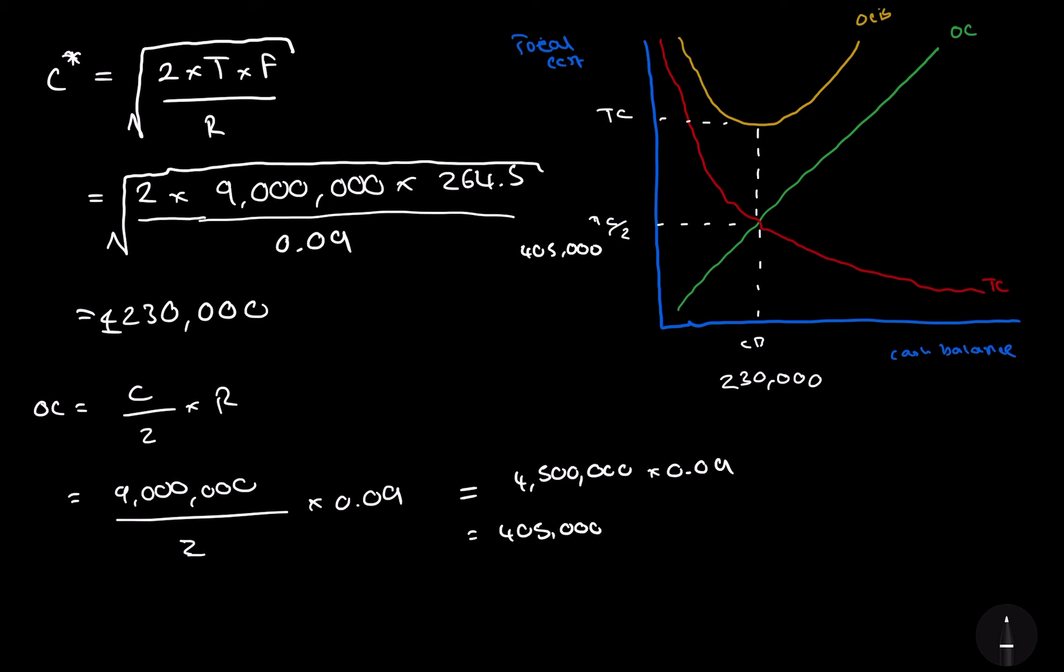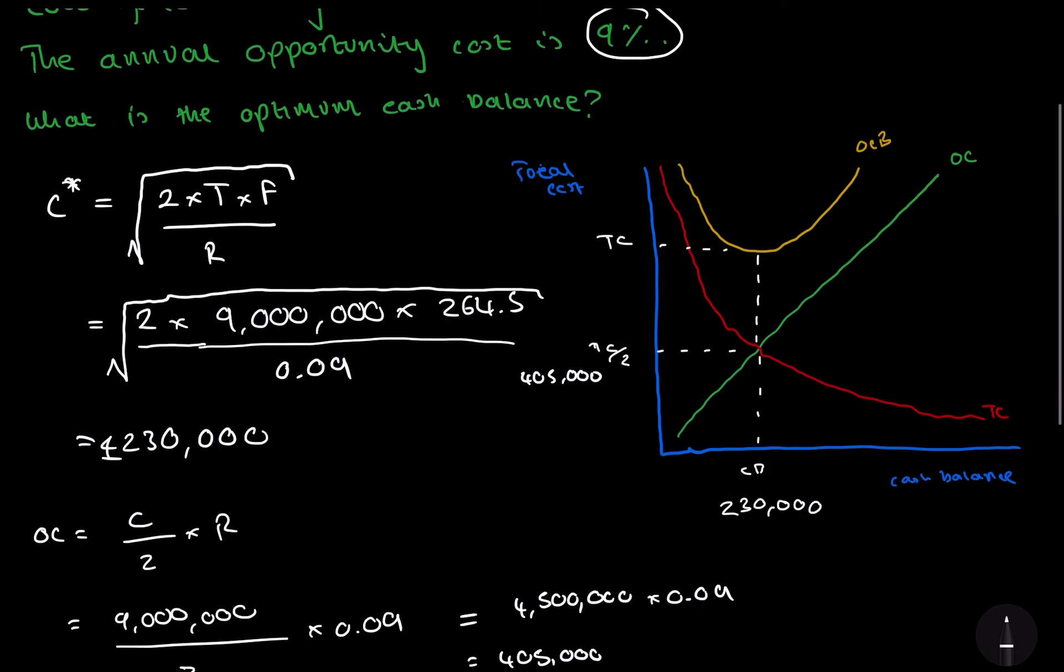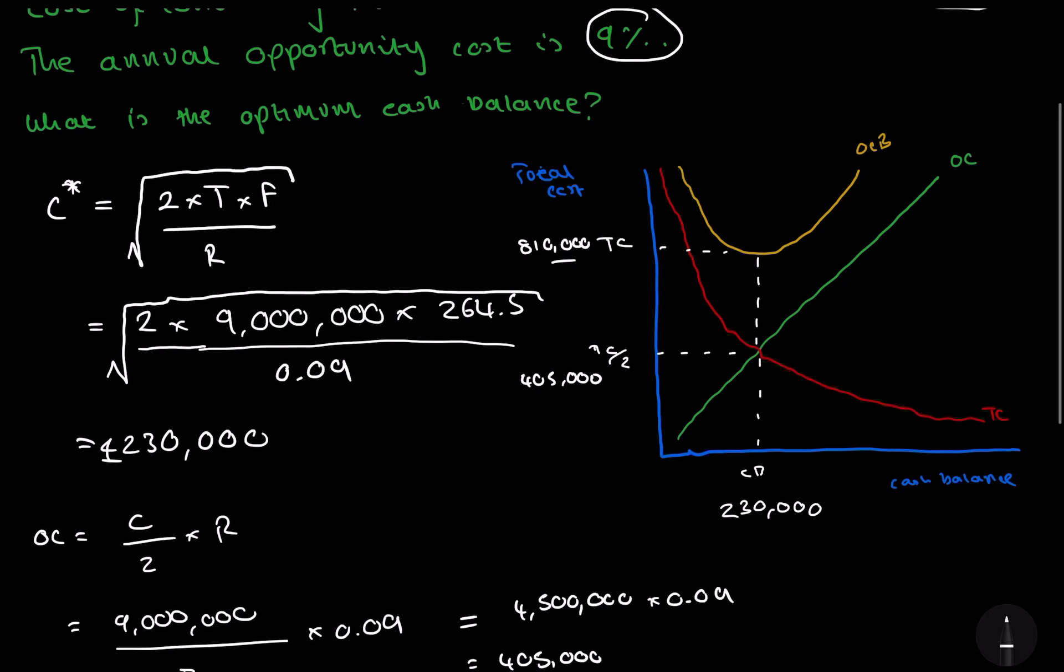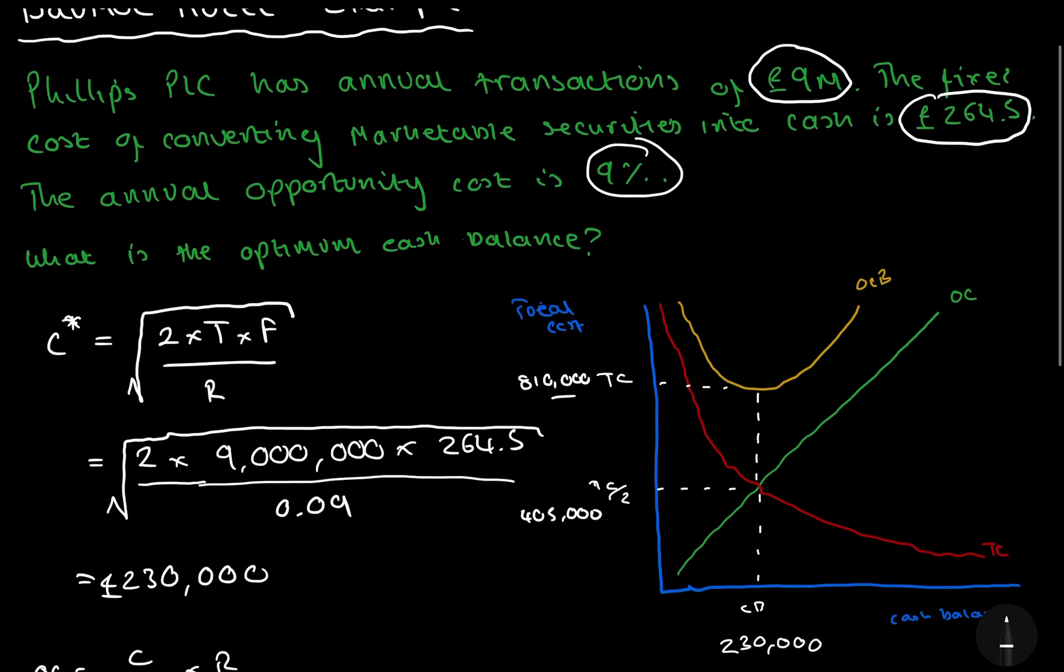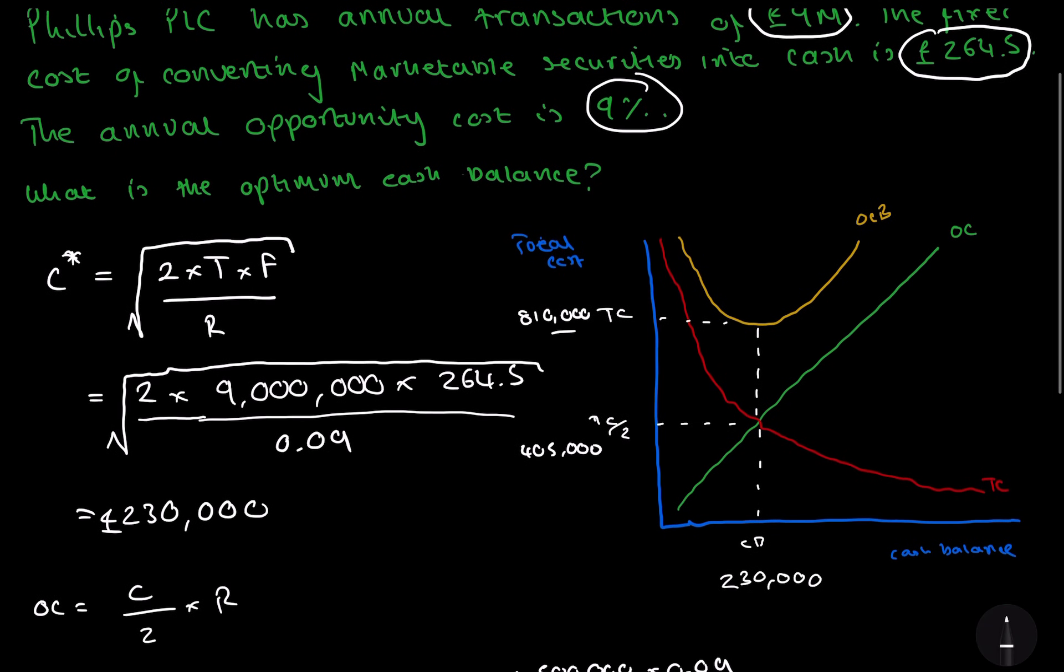And because the total cost and opportunity cost are the same, it's going to end up being 810,000. And that is an example of using the Baumol model. I hope you understand this video. I hope you go watch the other video. It will be in the playlist. Thanks for watching.